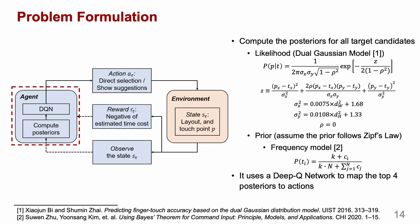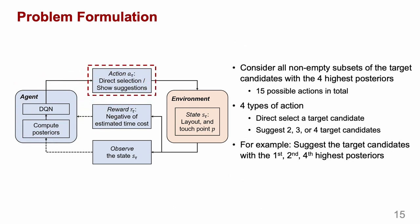Then we use a deep Q-network to map the top four posteriors to actions. To construct the action space, we only consider the top four target candidates, because one touch point is adjacent to at most four target candidates. We consider all subsets of the four target candidates to construct actions. Therefore, there are 15 actions in total, categorized into four types: directly select a target candidate, or suggest two, three, or four target candidates.